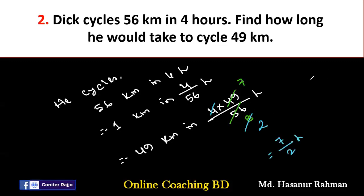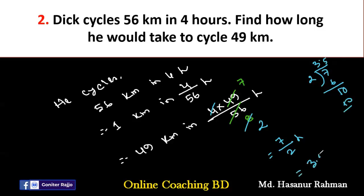If we convert 7 by 2 into a decimal: 2 into 7 is 3 remainder 1, put the decimal point, 2 into 10 is 5. So our final answer is 3.5 hours. Very simple.